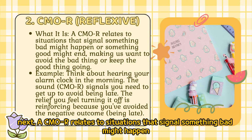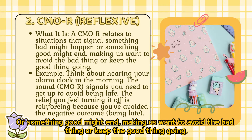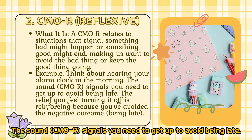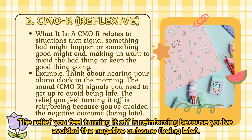A CMO-R relates to situations that signal something bad might happen or something good might end, making us want to avoid the bad thing or keep the good thing going. For example, think about hearing your alarm clock in the morning. The sound as a CMO-R signals you need to get up to avoid being late. The relief you feel turning it off is reinforcing because you've avoided the negative outcome of being late.